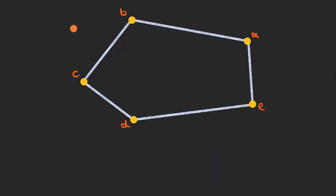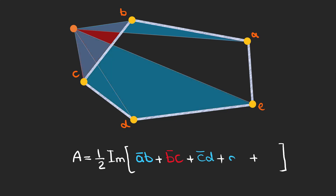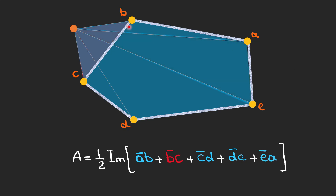Now let's change our origin and see what happens. We connect the new origin to the vertices, giving five other triangles. We use the imaginary part of the multiplication of complex numbers to find the area of the pentagon. The first triangle is positive because the angle from a to b is counter-clockwise, but the second is negative because the angle is clockwise. The next ones are positive again. The blue areas and red areas outside the pentagon cancel out to zero, and we are left with the area of the pentagon. This method works for any polygon, regardless of where the origin is placed.